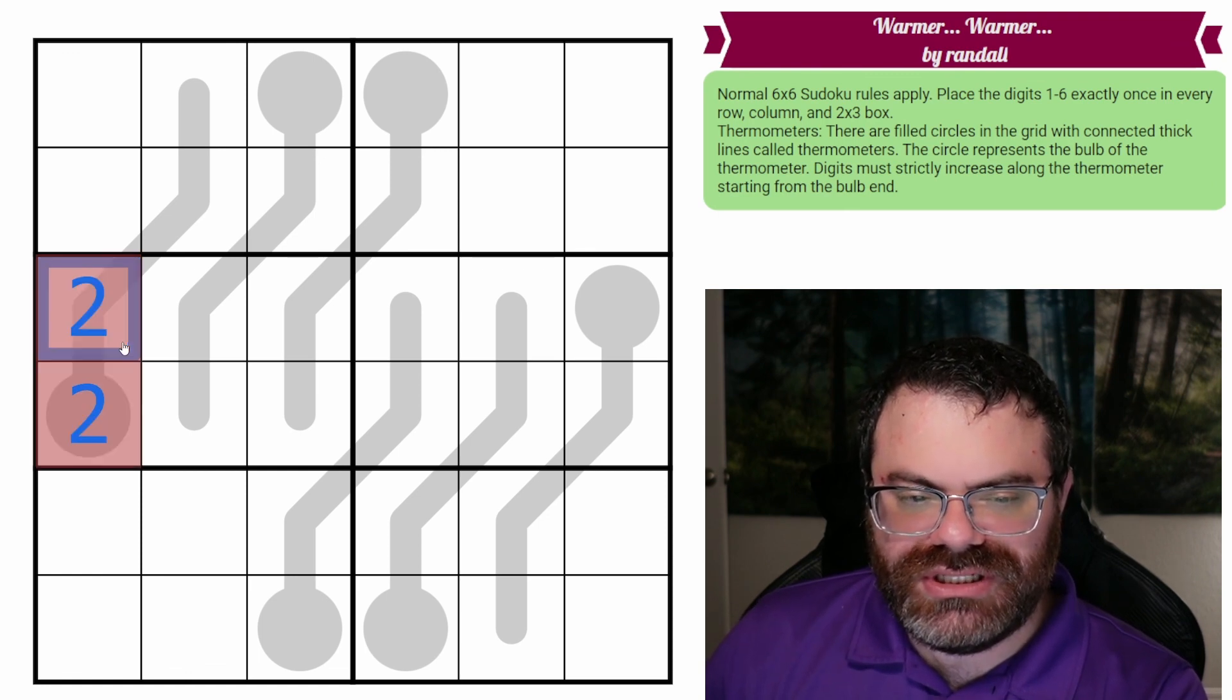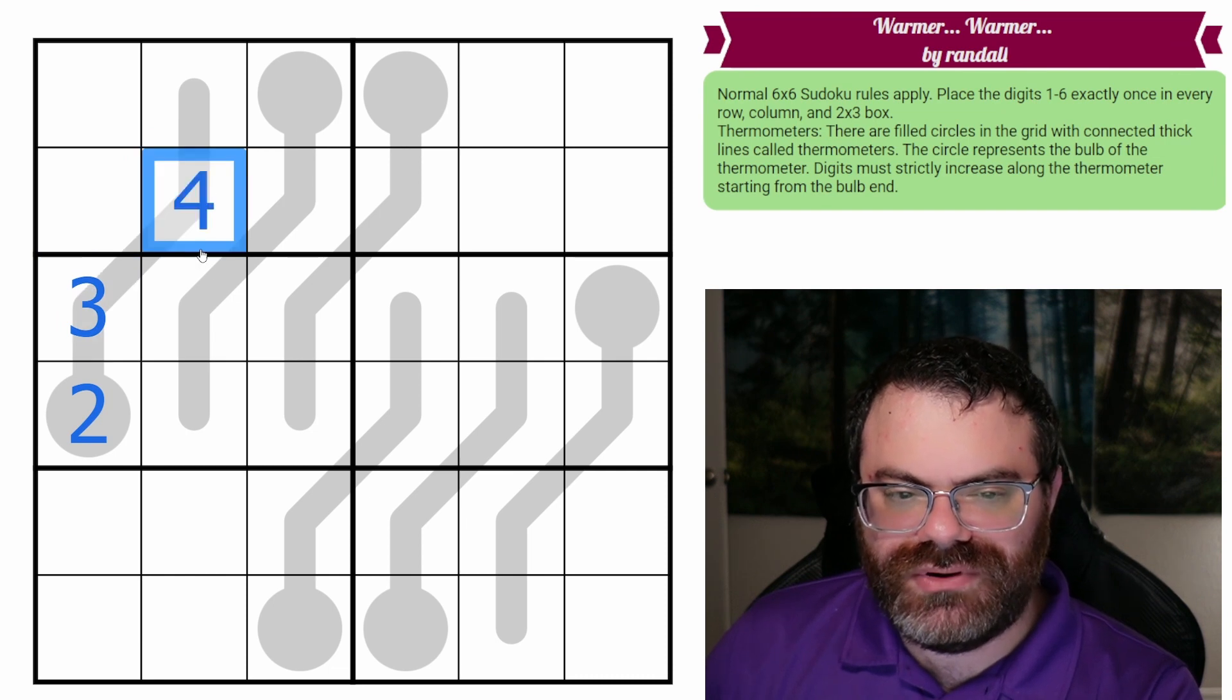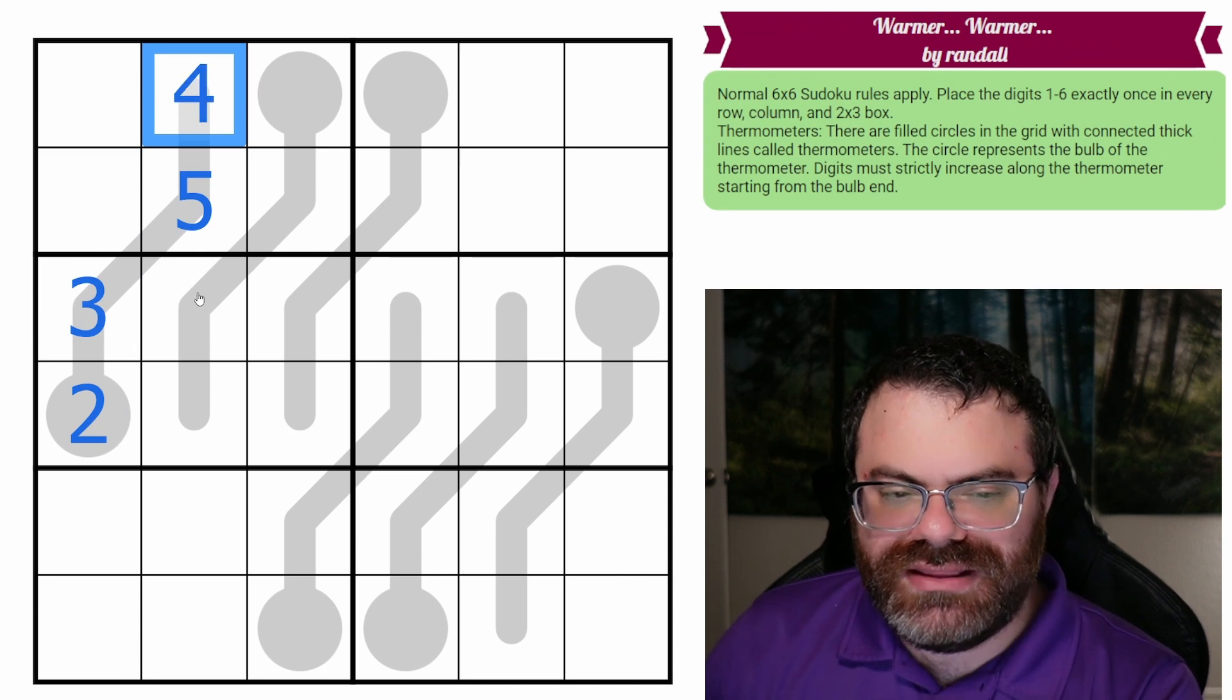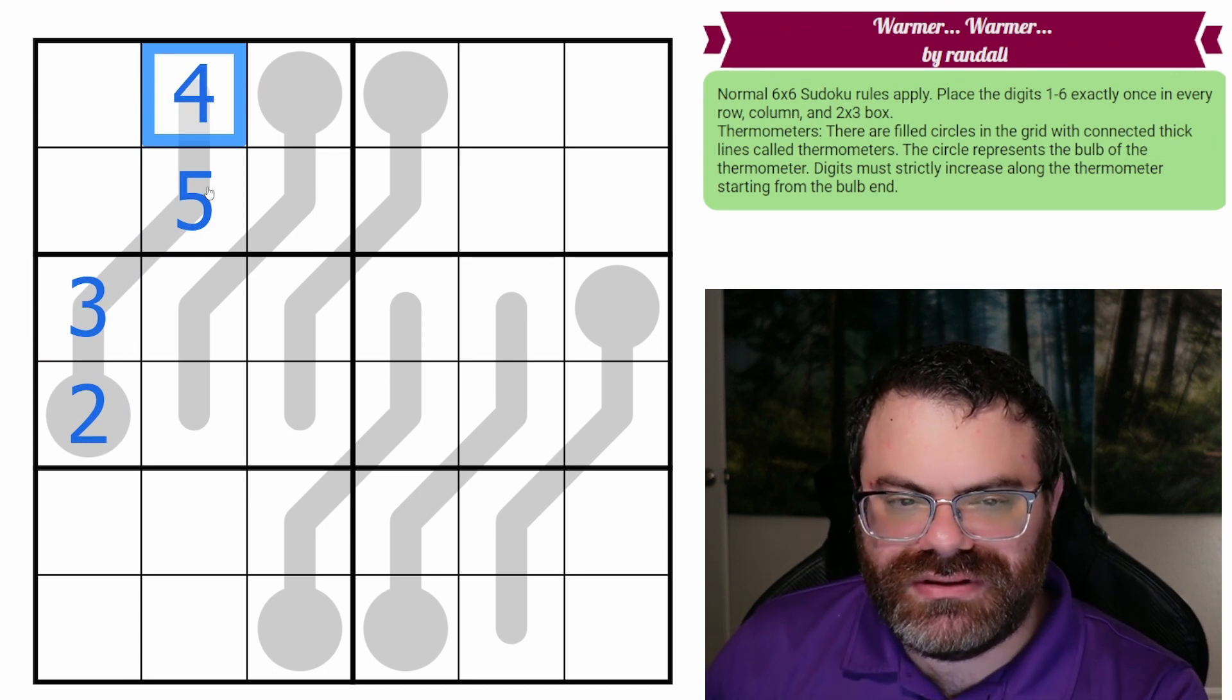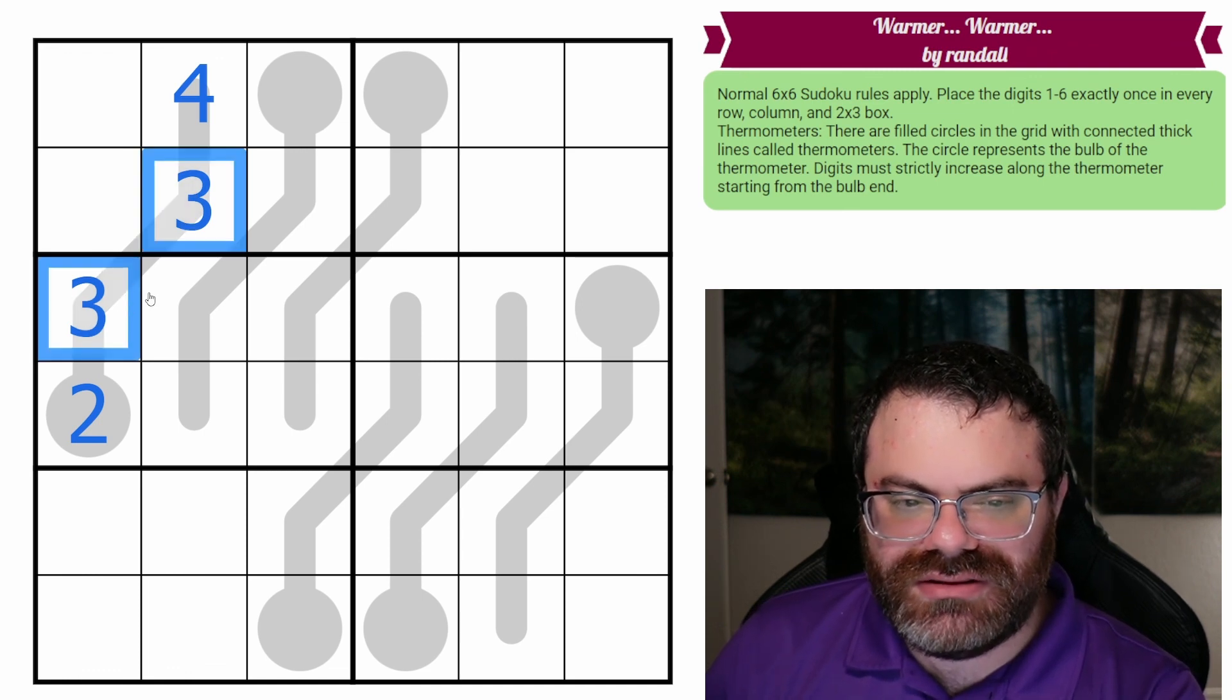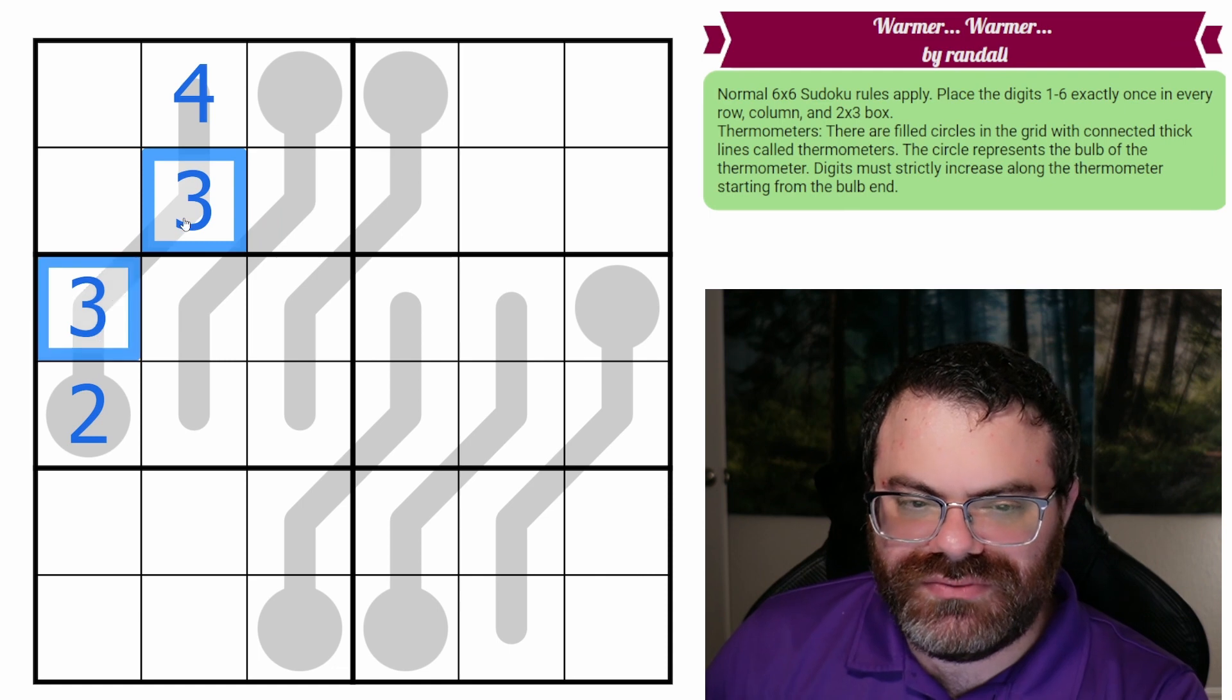But then once we pick a digit, say three, this now has to be bigger than that digit. So this has to be a four or five, we could go like that, that would be one way to correctly fill this. What we can't do is something like this, because the four is not bigger than the five. We also can't do this, even though Sudoku would allow us to repeat the three, the thermometer needs us to be bigger. So we can't even do the three, three there.